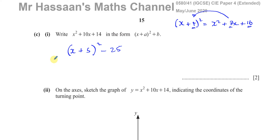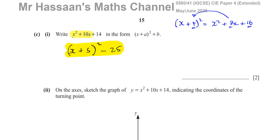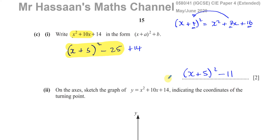We can verify: (x + 5)² − 25 gives x² + 10x + 25 − 25, which is x² + 10x. Adding the +14 from the original expression gives us (x + 5)² − 25 + 14, which equals (x + 5)² − 11. So we have now completed the square for this expression.